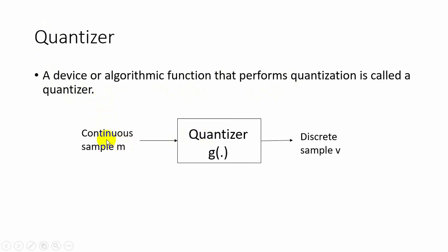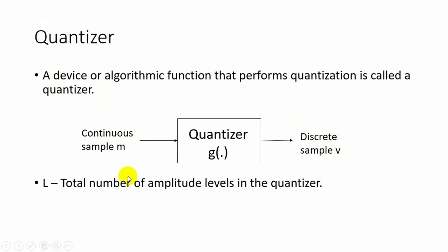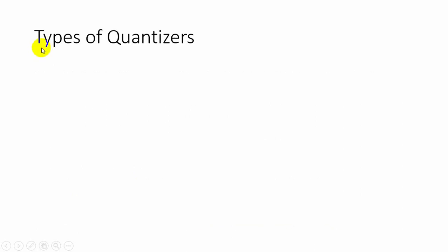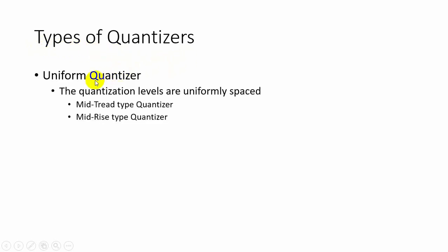The quantizer converts the continuous amplitude sample m into discrete amplitude sample v. Here L is the total number of amplitude levels in the quantizer, and the step size is the spacing between two adjacent representation levels, represented by delta. The first type is the uniform quantizer, where the quantization levels are uniformly spaced.